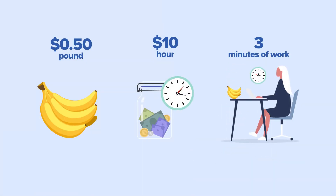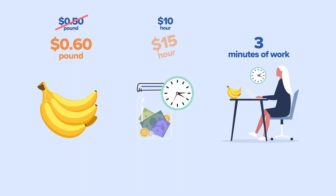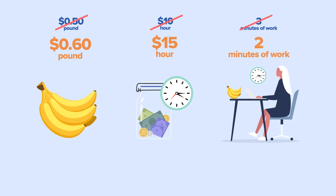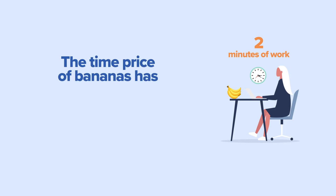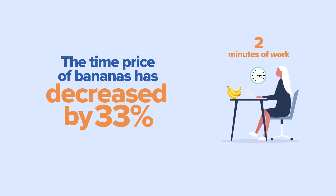If the money price of bananas increases to 60 cents a pound, but your income increases to $15 an hour, a pound of bananas will now cost you only two minutes of work. The time price of bananas has decreased by 33%.